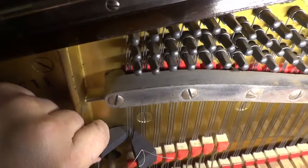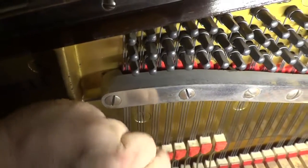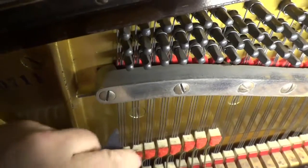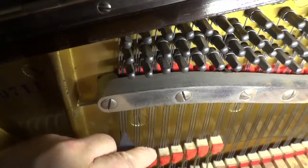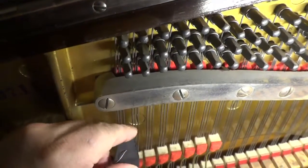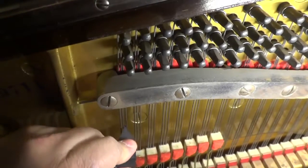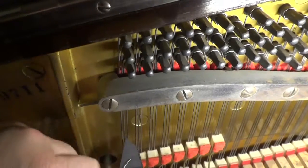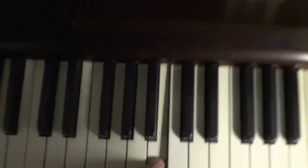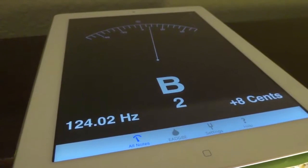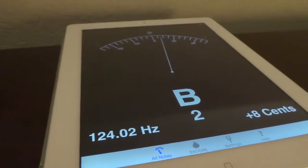We're going to insert a smaller rubber mute, a thinner rubber mute between the second and the third string, the middle and the right string. So basically I want to tune the left side, the left string, or the three string group for this B2 note. So it's plus eight as well, like the center string. A little too sharp.